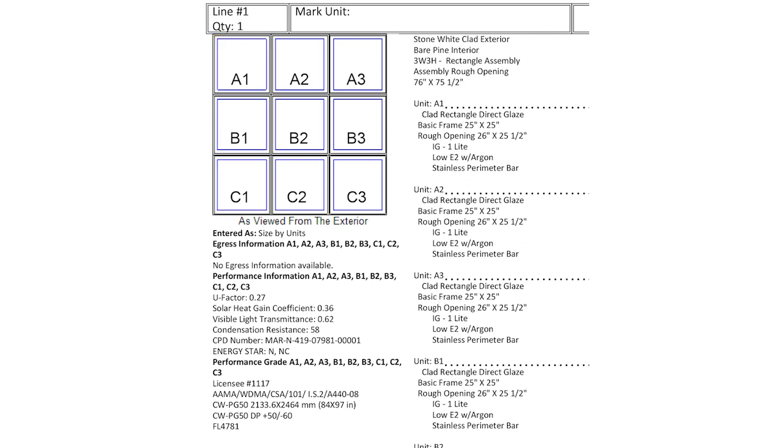For example, A1 is always the top left unit as viewed from the exterior. When laying out your assembly, refer to the quote diagram and the corresponding label on the unit.